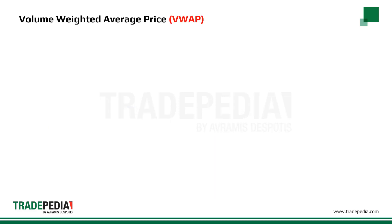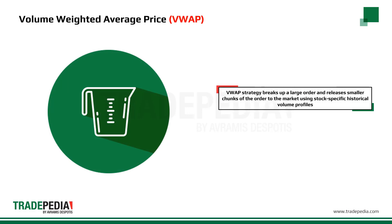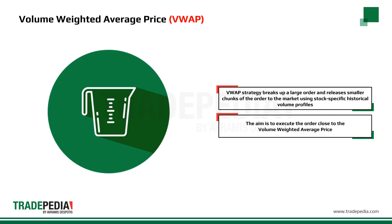The volume weighted average price (VWAP) strategy breaks up a large order and releases dynamically determined smaller chunks of the order to the market using stock-specific historical volume profiles. The aim is to execute the order close to the volume weighted average price.